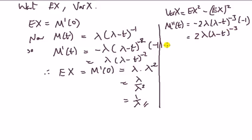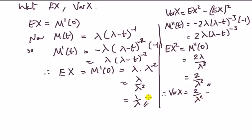The second moment is this second derivative evaluated at t=0, which gives us 2λ/λ³ = 2/λ². Therefore, the variance of X is 2/λ² minus (1/λ)² = 2/λ² - 1/λ² = 1/λ².